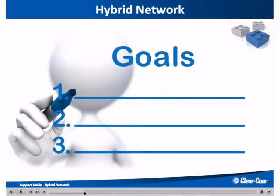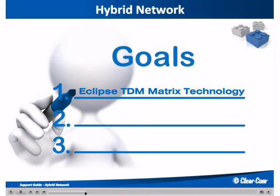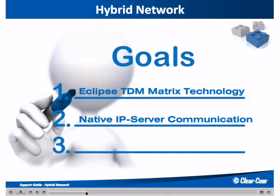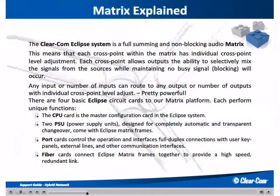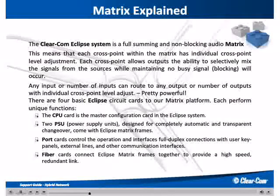So, let us begin. We have set ourselves three goals. We will be discussing Eclipse matrix technology, IP communications, and finally, wireless communications. We are going to discuss an intercom matrix. Intercom matrices are full-summing and non-blocking. This differs greatly from an audio router that simply makes an input-to-output route. The complexity in production intercom survives through the use of this audio matrix.